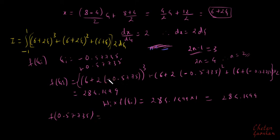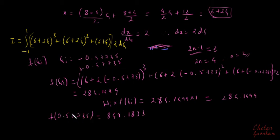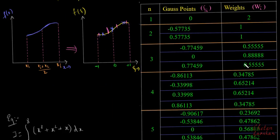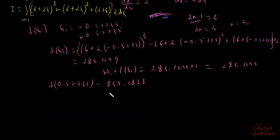At the second Gauss point ξ₂ = +0.57735, we substitute +0.57735 in place of −0.57735 in the same equation. This gives f(ξ₂) = 849.1833. The corresponding weight is also 1, so w₂ × f(ξ₂) = 849.1833 × 1 = 849.1833.